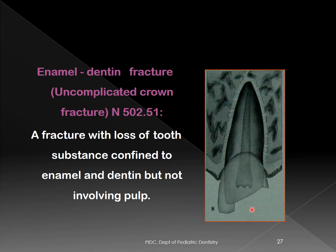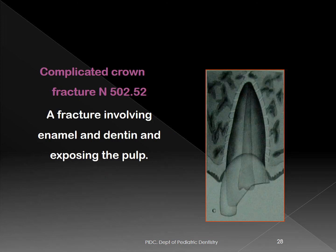Uncomplicated fracture can also involve enamel and dentine. According to WHO, this would be diagnosed as uncomplicated crown fracture (enamel and dentine) — still uncomplicated because the pulp is not involved. When the fracture involves enamel, dentine, and exposes the pulp, it is called a complicated crown fracture — complicated meaning the pulp is now exposed.